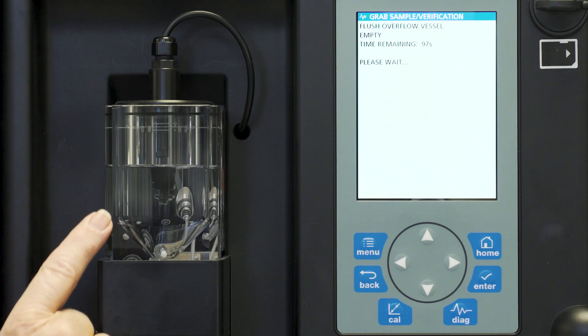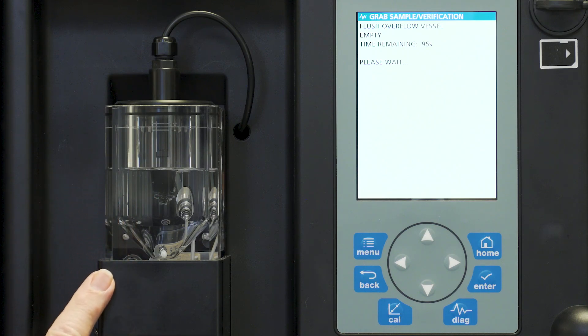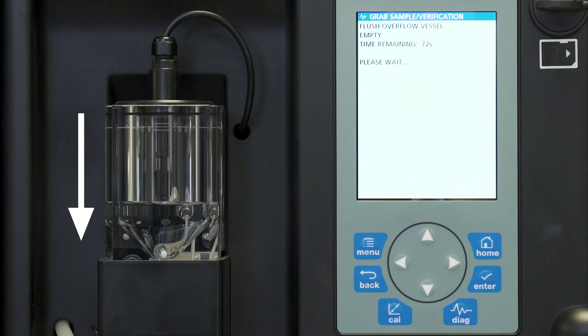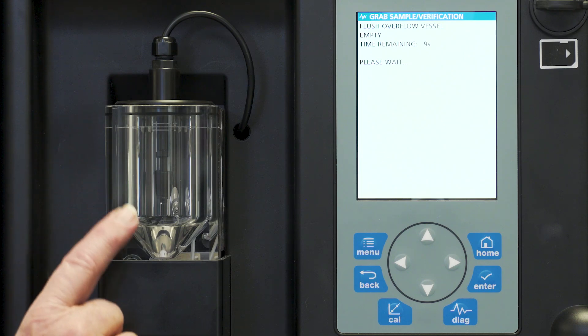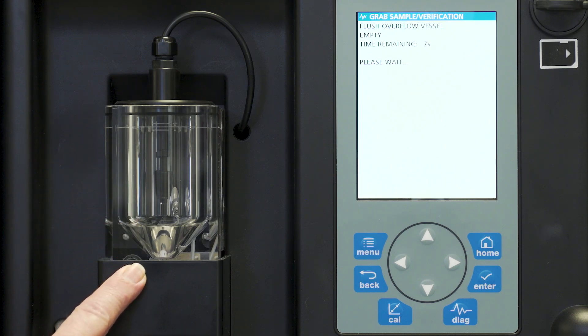So you notice that the instrument is slowly emptying the overflow chamber of the sample as a flushing. You will notice that we have now emptied this overflow chamber.